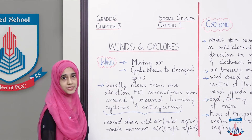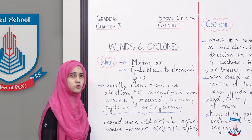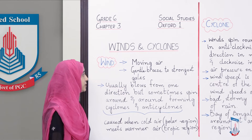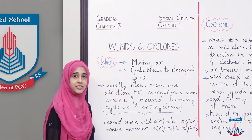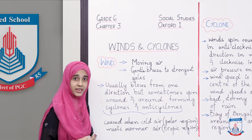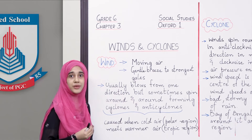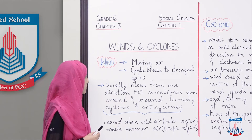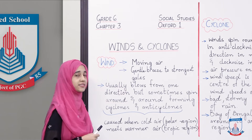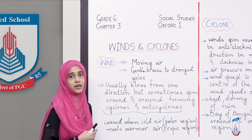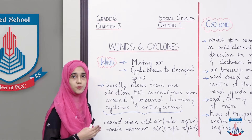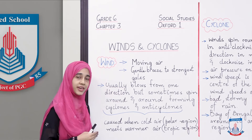Children, what is wind? Moving air is called wind. Wind can range from a gentle breeze to the strongest gales. Wind usually blows from one direction, but sometimes winds spin around and around, forming cyclones and anti-cyclones.